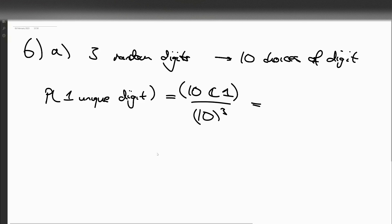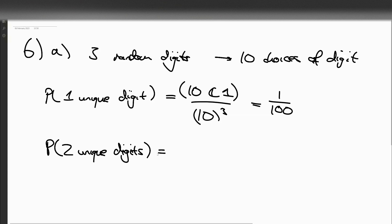So that's ten over ten cubed, which is one over one hundred. The probability of getting two unique digits is our number of ways of choosing two digits from ten, so ten choose two. But then we need to pick one of them to be the double digit, so there's two choices of which of them is the double digit, and then we have to think of how many ways there are of permuting our three digits, which is three factorial.